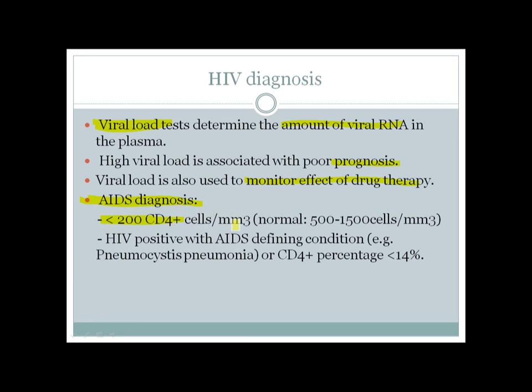Or an AIDS diagnosis can be made if a patient who is HIV-positive develops an AIDS-defining condition such as Pneumocystis pneumonia, or if the CD4 percentage is less than 14%. Those are the basic criteria for diagnosis of acquired immunodeficiency syndrome, AIDS, which is a complication of HIV infection.